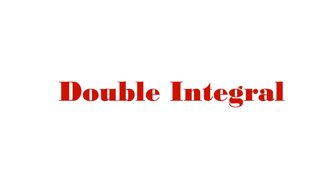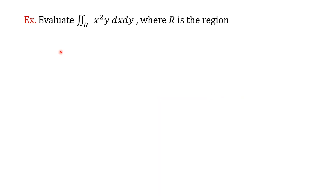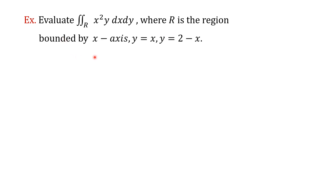Hello students. Today we are going to solve an example on double integral when the limits of the double integral are not given. The example is: evaluate the double integration over the region R of x squared y dx dy, where R is the region bounded by the x-axis, the line y equal to x, and the line y equal to 2 minus x.